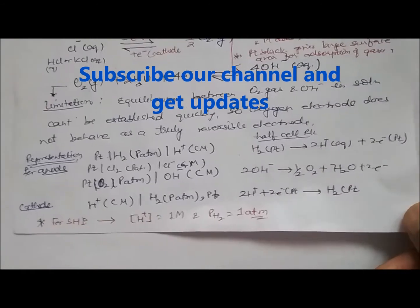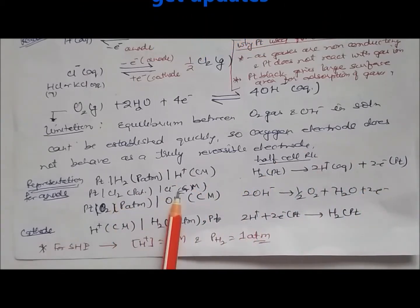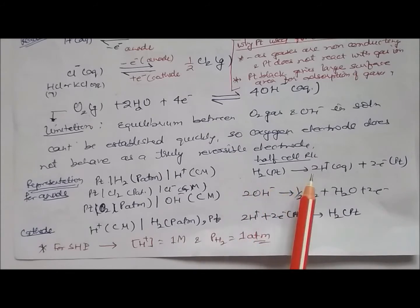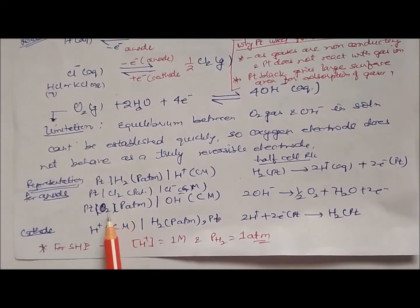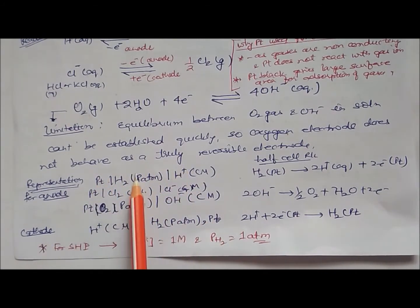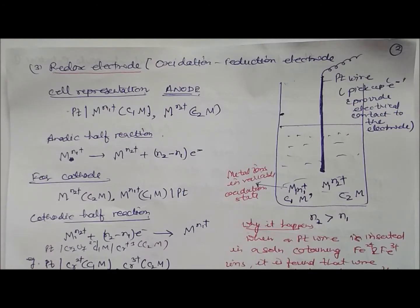The representation of the hydrogen gas electrode is written as: Pt | H₂(P atm) | H⁺(C M). Similarly for Cl₂: Pt | Cl₂(P atm) | Cl⁻(C M), where Cl₂ + 2e⁻ → 2Cl⁻. For oxygen: Pt | O₂(P atm) | OH⁻(C M), where ½O₂ + H₂O + 2e⁻ → 2OH⁻. For the hydrogen electrode, the standard form is Pt | H₂(1 atm) | H⁺(1 M).